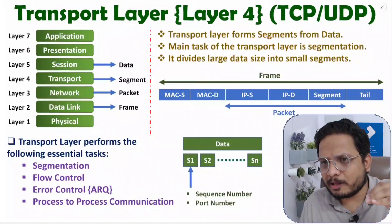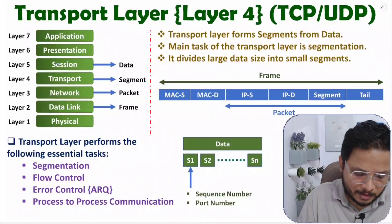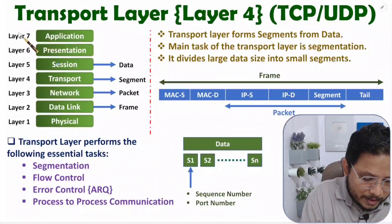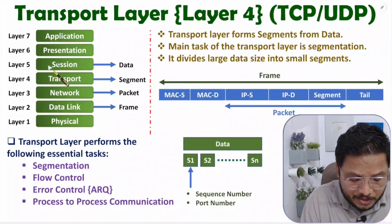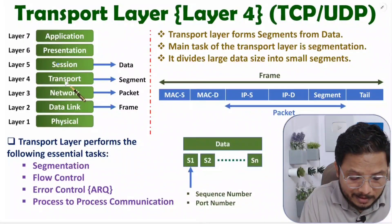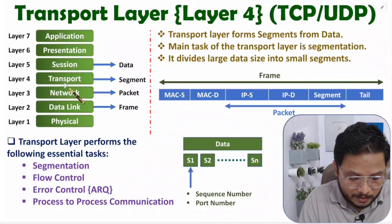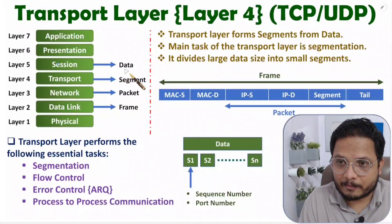With both models, layer number four is the transport layer. In the OSI model we have seven layers, and in the TCP/IP model, instead of the upper three layers, we have a single application layer followed by the transport layer. The transport layer takes input from the session layer — that input is data.